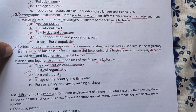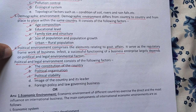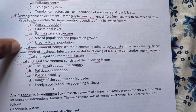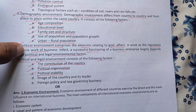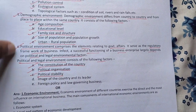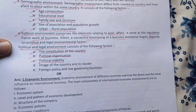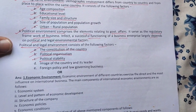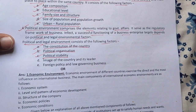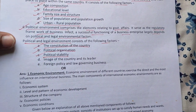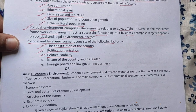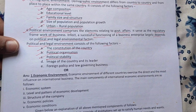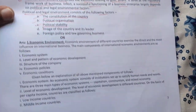The last environment is the political environment. The political and legal environment factors include: the constitution of the country, political organization, political stability, image of the country and its leaders, foreign policy, and laws governing business.